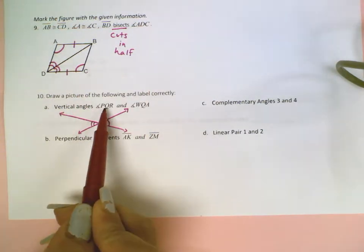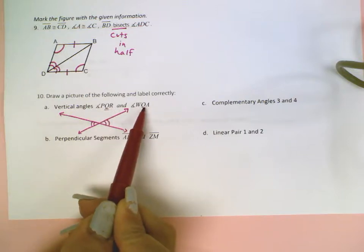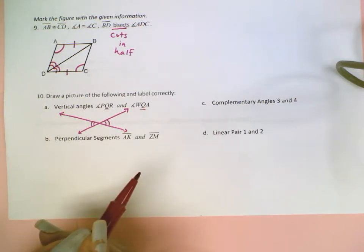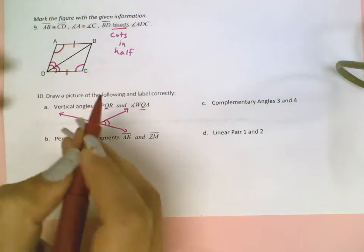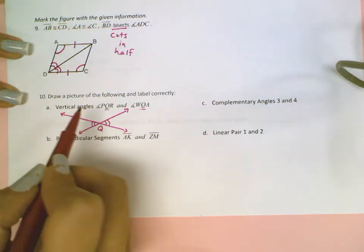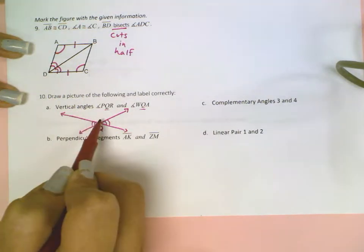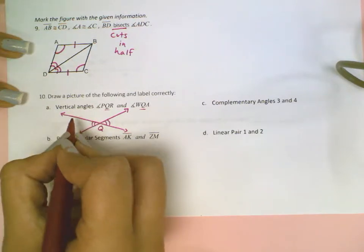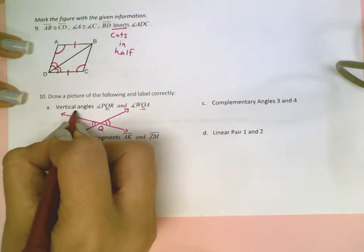They both share Q being that middle letter, which is going to be the vertex. They both share that vertex, so we can already put Q right here. Now if I'm labeling this angle right here, that's going to be angle PQR. So I can put P anywhere over here and R anywhere over here.